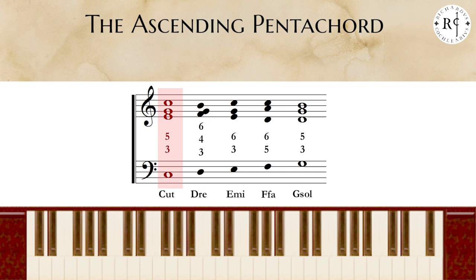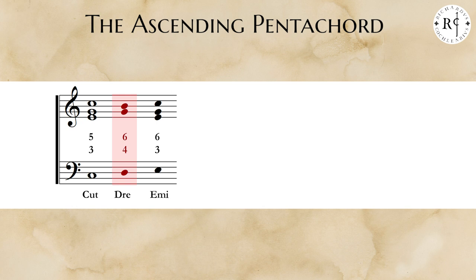Be careful! The fourth and sixth chord is unstable. For that reason, on D Re we necessarily need the third, which is F, creating in this way the movement Fa-Mi against Mi-Fa.